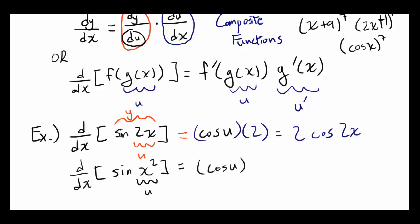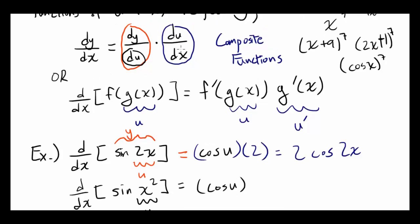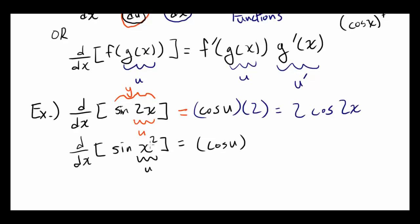Then you multiply it by the derivative of u. And u is x squared, so the derivative of u is going to be 2x. So this thing is going to be 2x times cosine of u, or cosine of x squared.